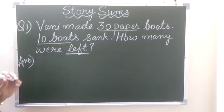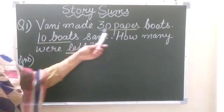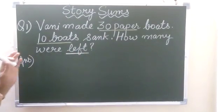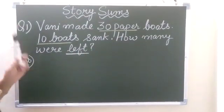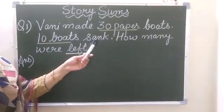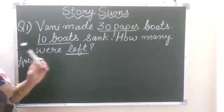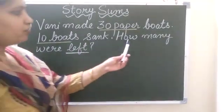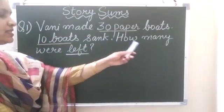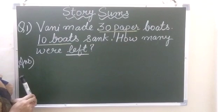So how many boats did she make? She made 30 paper boats. Vani ne 30 paper boats banai hai. Un 30 paper boats mein se 10 boats sank. Sank means doob jana. Kittni doob jati hai? 10. So you have to find how many were left. Kittni boats left — means banh jati hai.